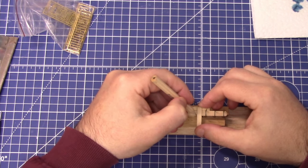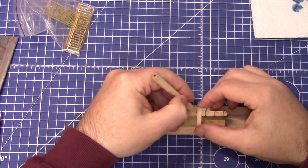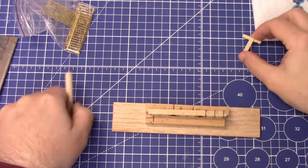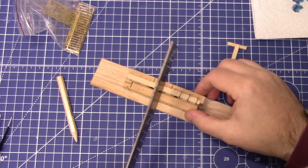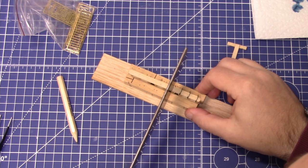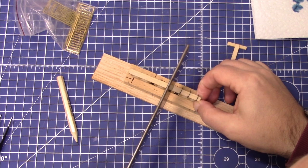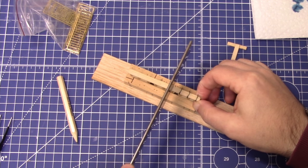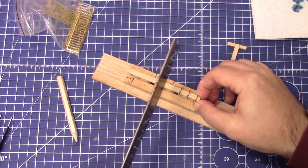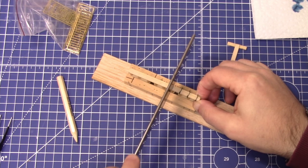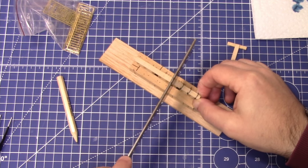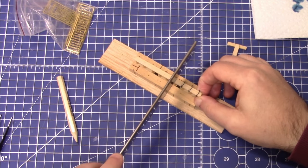Using the t-square. Mark all the way across. Same again. Razor saw. Line up the mark. Pretty much once the teeth aren't visible anymore, you know that's about half a mil.